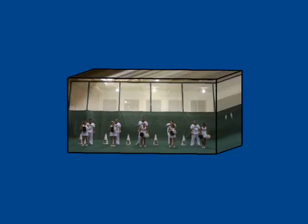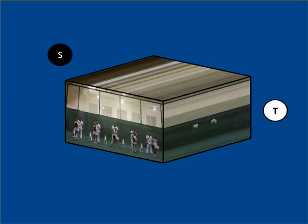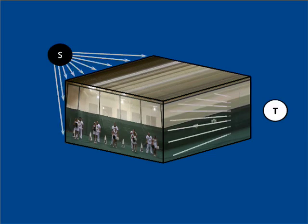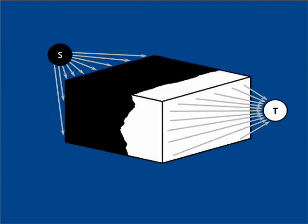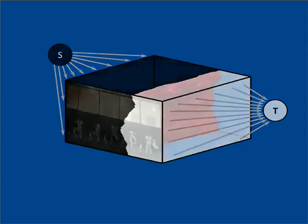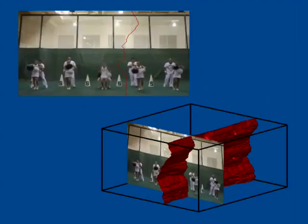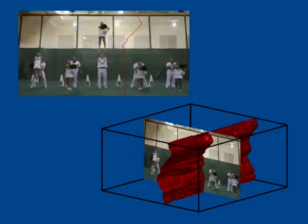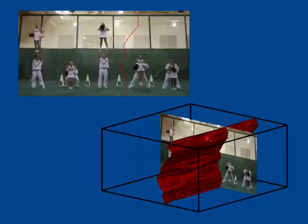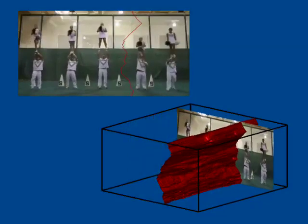Our solution is to treat all the video as a 3D cube. We then replace the dynamic programming algorithm that is limited to 2D with a 3D graph cut approach. We define a grid-like graph whose nodes represent pixels and add a source and target virtual nodes on both sides of the cube. A cut in this graph defines a surface seam inside the space-time volume. The intersection of this 2D surface with each frame defines the seam path on that frame.